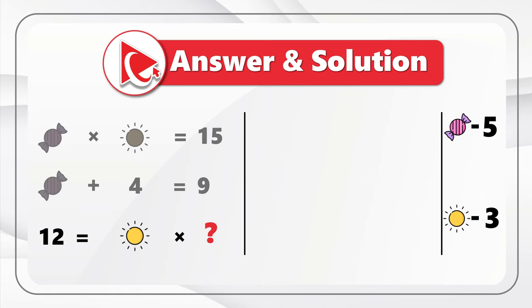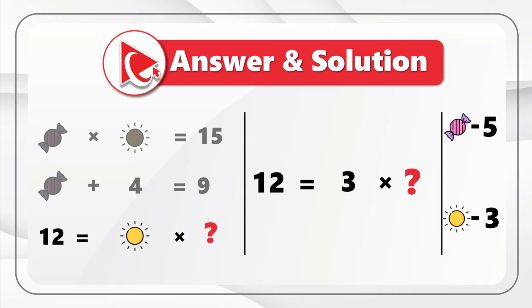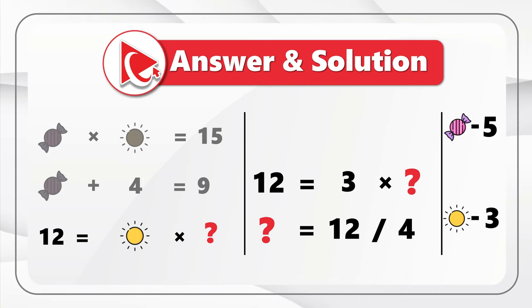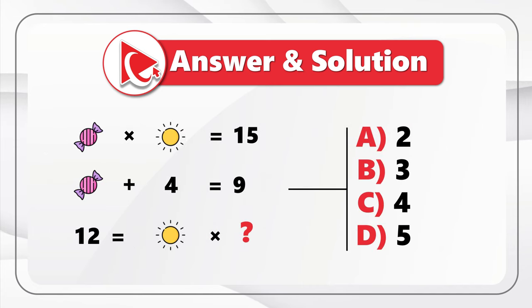Now we can focus on the last expression: 12 equals sun multiplied by question mark. We know sun is 3, and substituting gives us 12 equals 3 multiplied by question mark. The question mark can be calculated as 12 divided by 4, so the end result is answer C, which is 4. If you came up with a different answer, please post your answer and solution in comments.